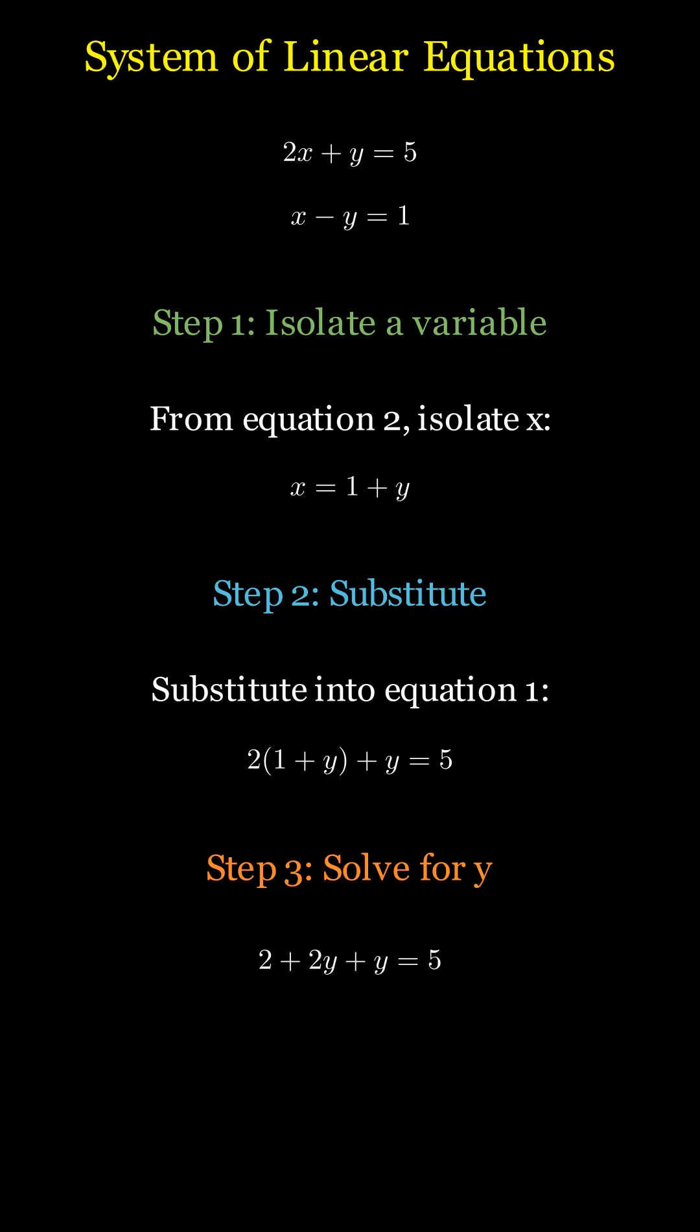Distribute the 2: 2 plus 2y plus y equals 5. Combine like terms: 2 plus 3y equals 5. Subtract 2 from both sides: 3y equals 3. Divide by 3: y equals 1.